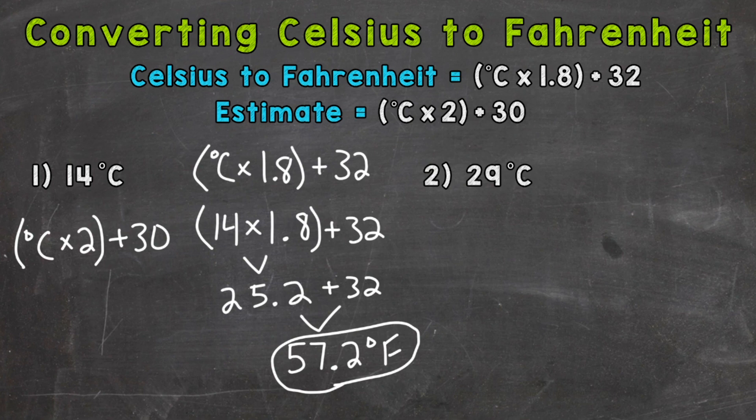So for example, number one, we can do 14 degrees Celsius times 2, which is 28, plus 30 is 58. So this formula would give us an estimation of 58 degrees Fahrenheit, which you can see is pretty close to the actual conversion. That would give us a good estimate there.